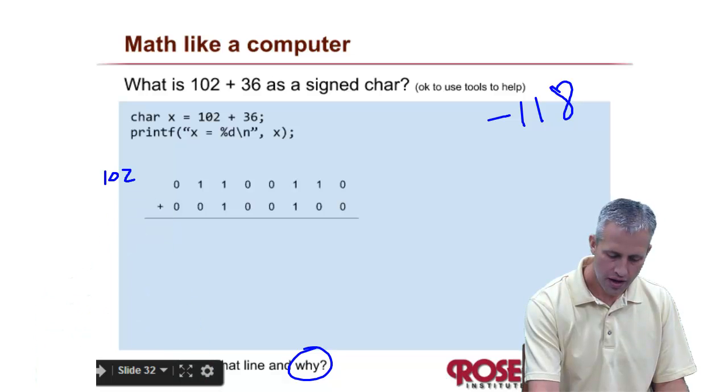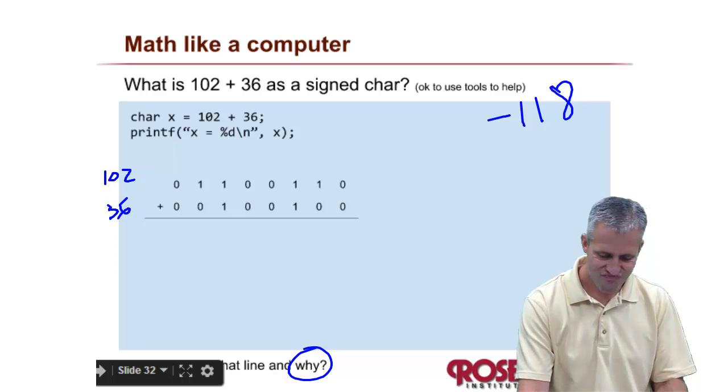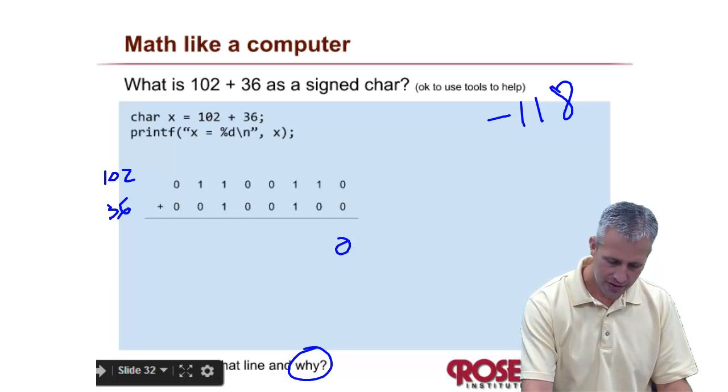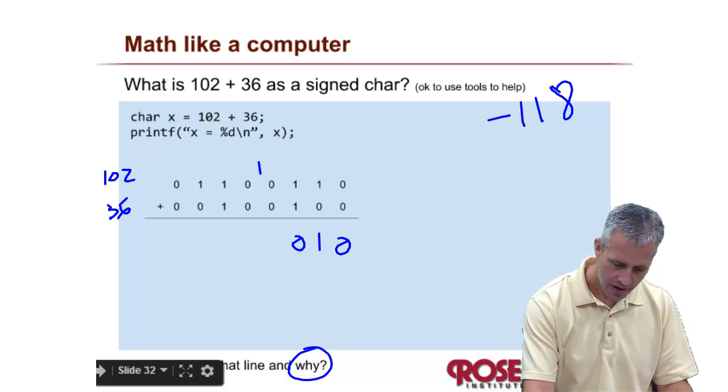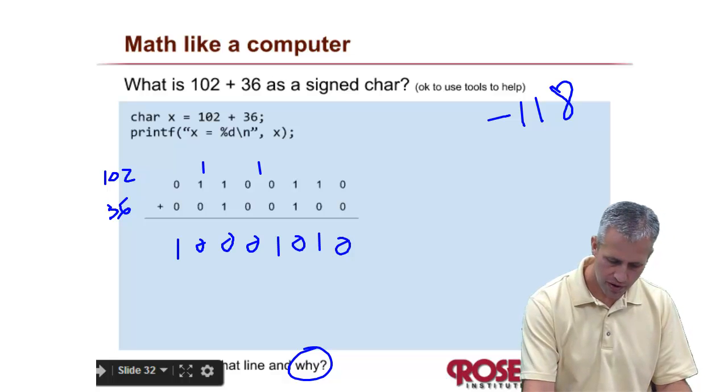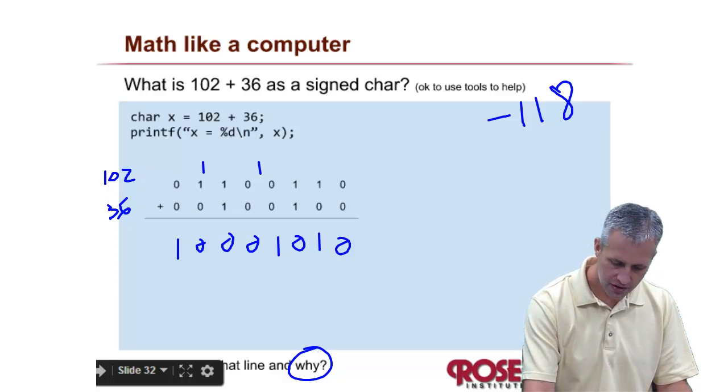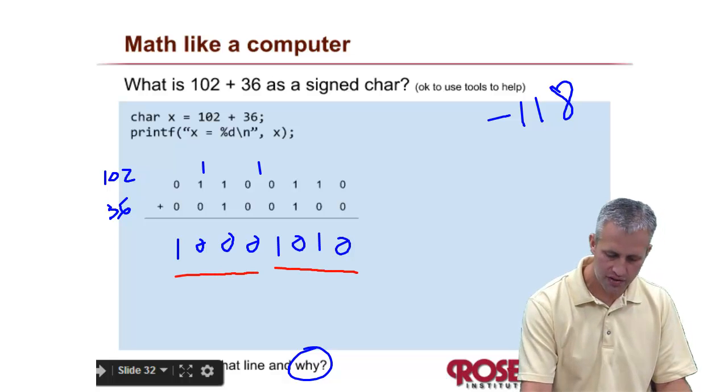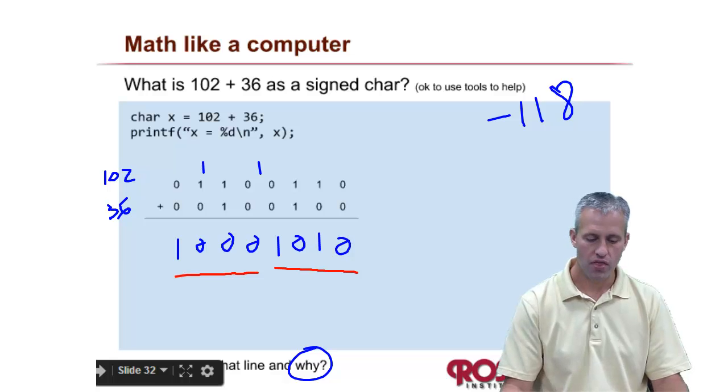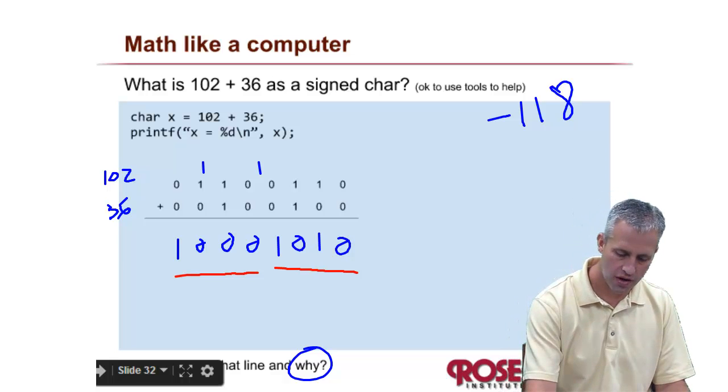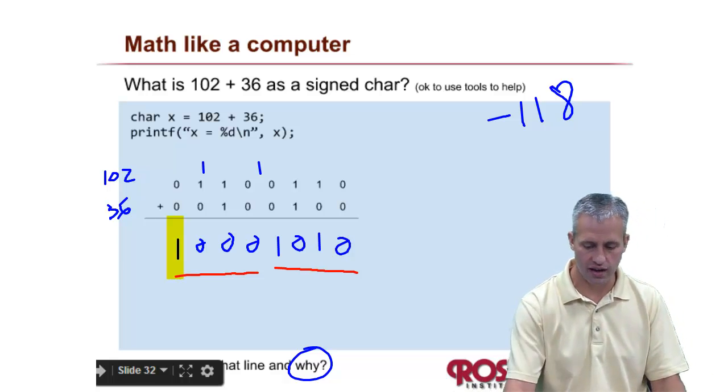So here's 102. Here's 36, hopefully. And if we add them together, we can see that we get this number right here. The first thing that you should look at is if we're doing this as 8-bit math, that the most significant bit is a 1, which means that this is a negative number, right?